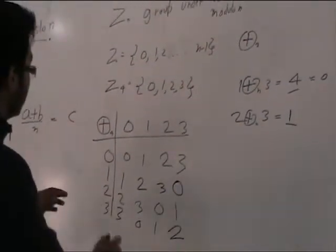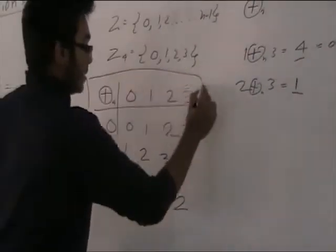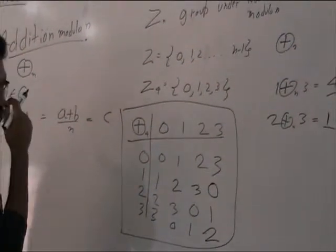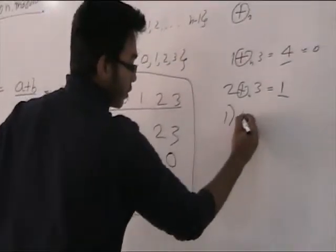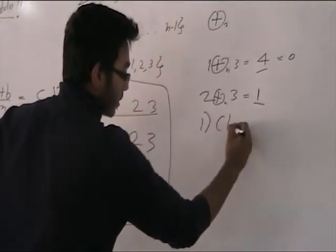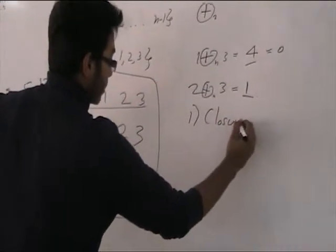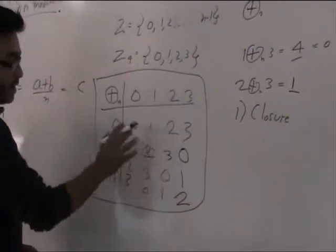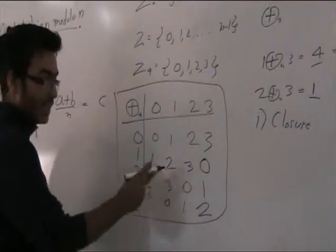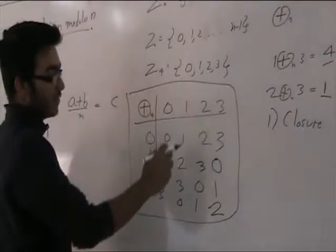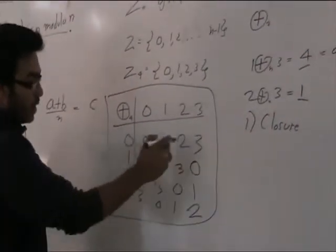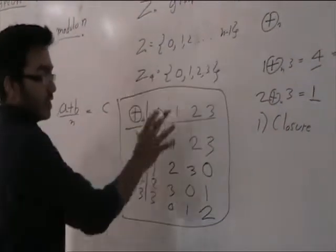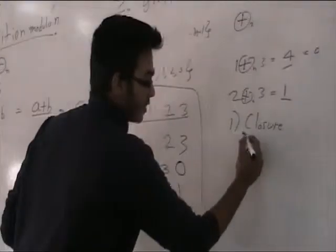Keeping this Cayley table in mind, I can see that it satisfies the properties of a group. We can see first of all closure — when two elements are combined, it does not produce any element which is outside Z4. All of these results are contained in Z4, so it satisfies closure.